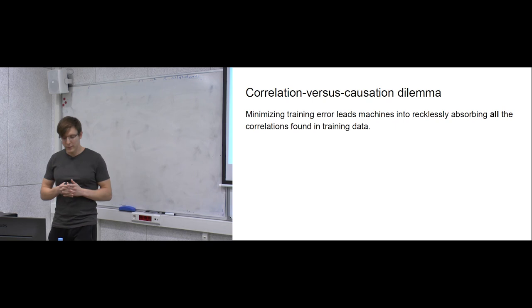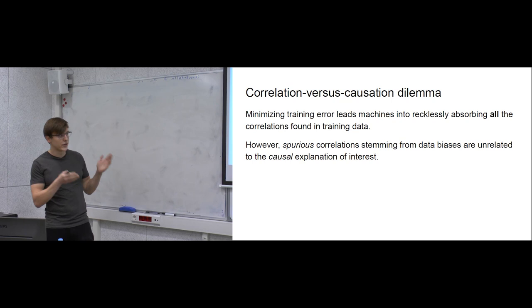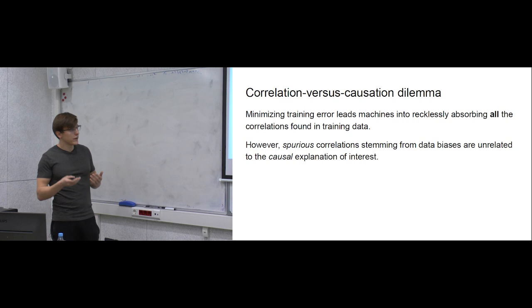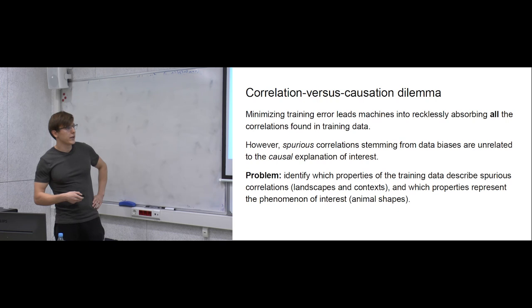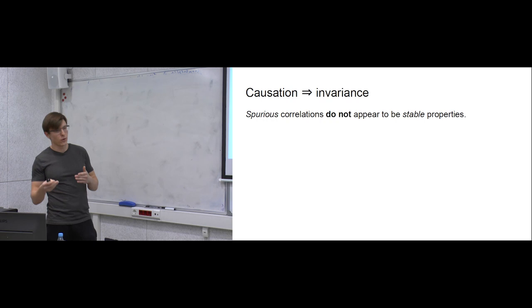Here we come to the classical correlation versus causation dilemma. Modern machine learning algorithms tend to absorb all the correlations they can find in data, and data contains many spurious correlations induced by various biases — random factors, our way of collecting or processing data. We always have spurious correlations we don't want to learn. We want to identify properties that describe spurious correlations and get rid of them, and identify useful properties representing the phenomenon of interest, like animal shapes in our example.